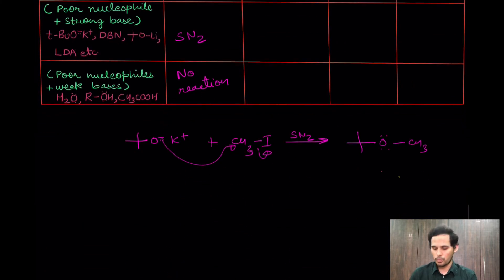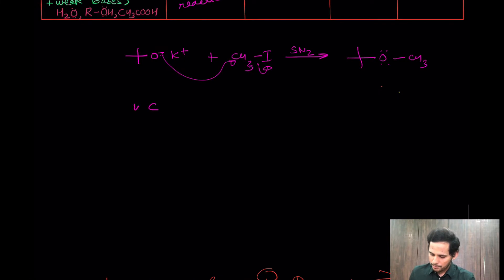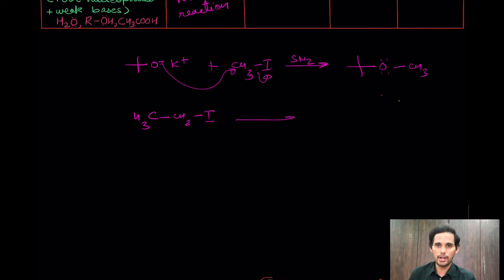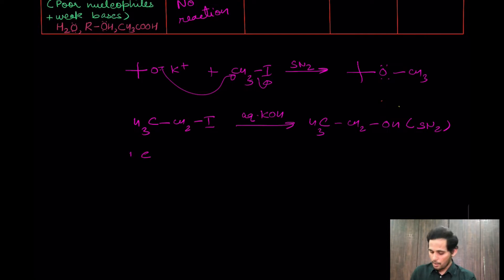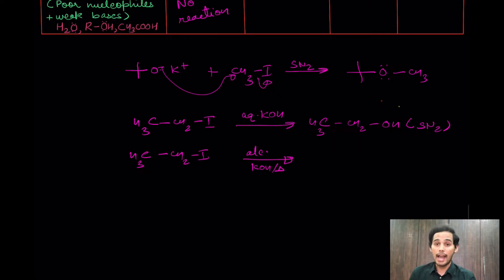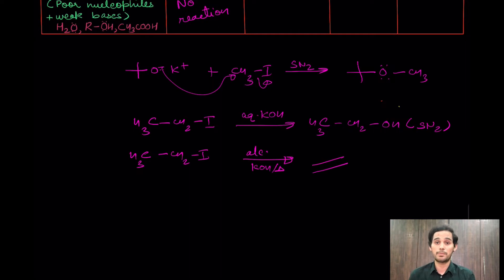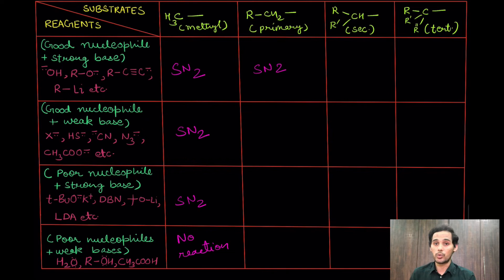For example, ethyl iodide with aqueous KOH at room temperature — expect SN2, giving ethanol as the product. But the same substrate with alcoholic KOH and heat — expect elimination, giving ethene as the major product. So this case is not simple and oversimplification should be avoided, but if a one-word answer is needed, SN2 is the dominant pathway for primary substrates with good nucleophile and strong base at moderate conditions.